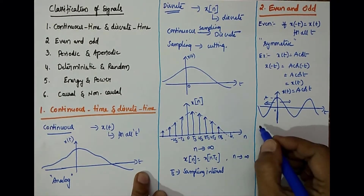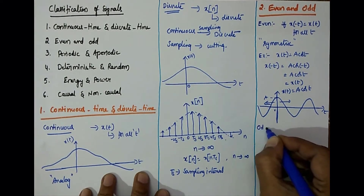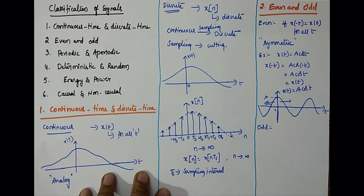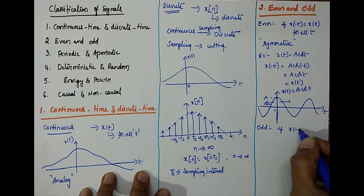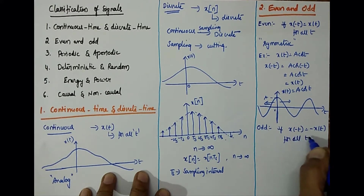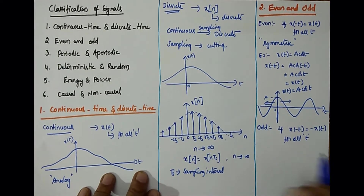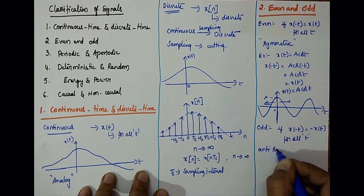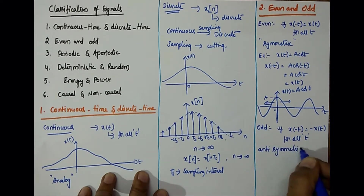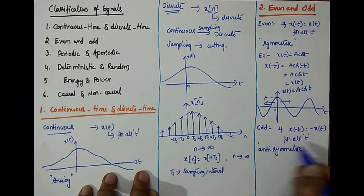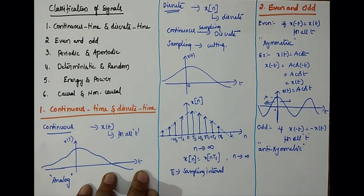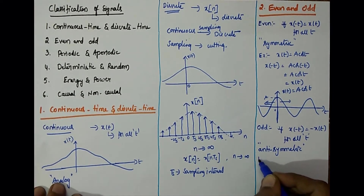Now what is an odd signal? A continuous signal is said to be odd if x of minus t is equal to minus x of t for all t. These are called anti-symmetric signals.